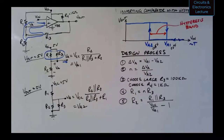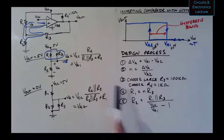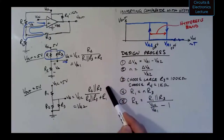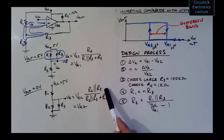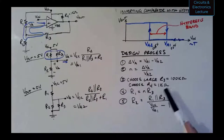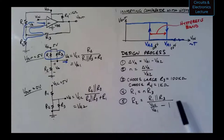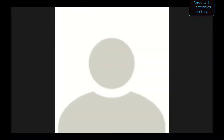A student asks where the formulas for R1 and R2 come from. They come from the two equations on the left — it's just an alternate, easier way of solving those two equations. Given VA1, VA2, R3, and R4, you can solve for R1 and R2. These formulas are simply a shortcut for that process.